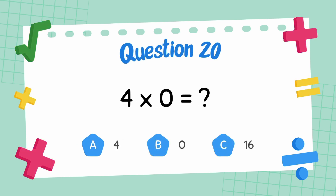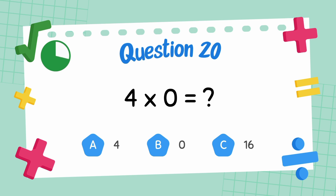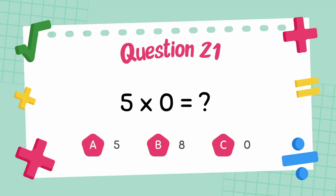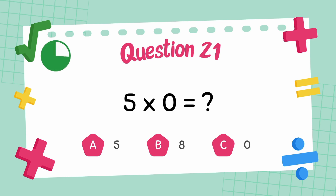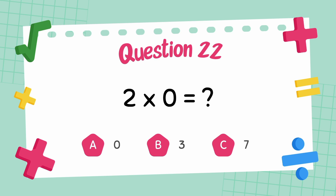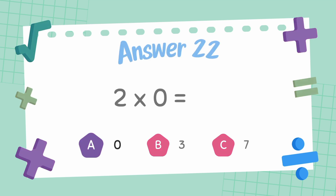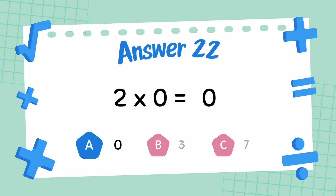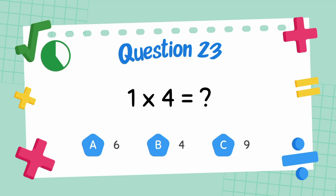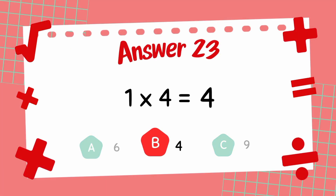What is 4 multiply 0? The answer is 0. What is 5 multiply 0? The answer is 0. What is 2 multiply 0? The answer is 0. What is 1 multiply 4? The answer is 4.